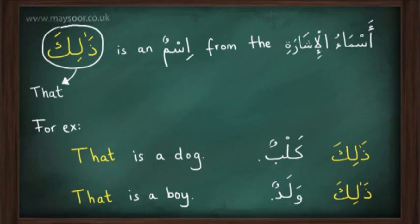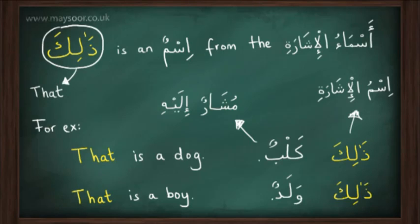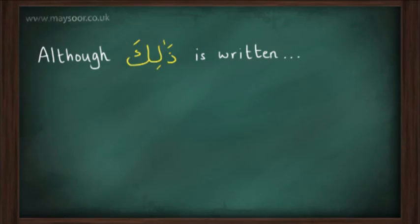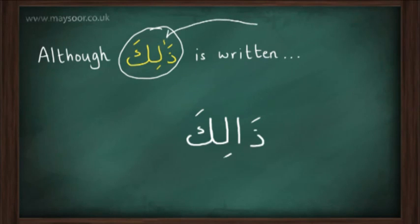In those two sentences, ذالك is known as the اسم الإشارة — it means 'that' — whilst كلب and ولد are known as the مشار إليه, the thing or person being pointed to. Although ذالك is written one way, it is pronounced as ذالك. It would be incorrect to pronounce it differently, and sometimes you will see a small prolongation sign after the first letter.